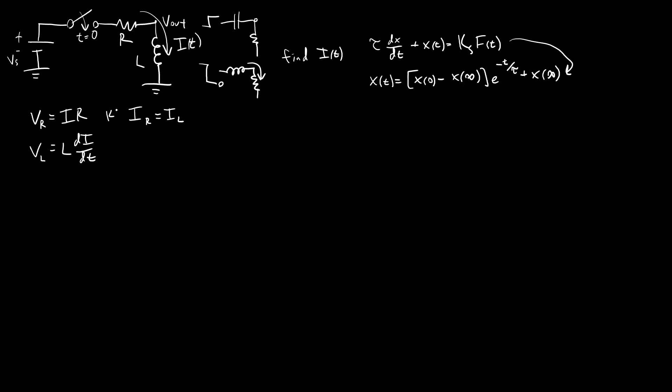This is applying KCL. And if we apply KVL, we know those two voltages, VR plus VL, the voltage over the inductor, have to equal the voltage of the battery once the switch is closed.